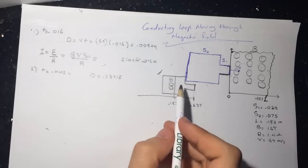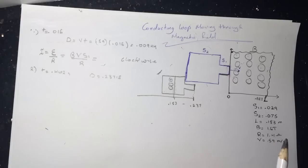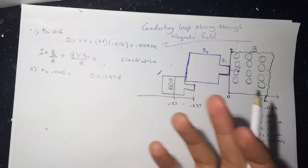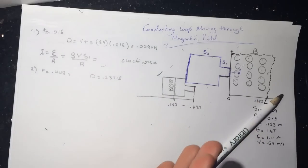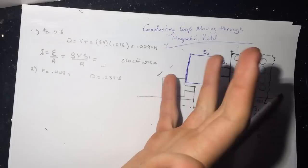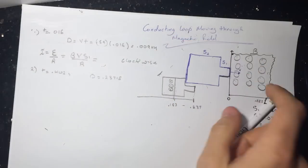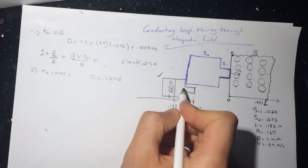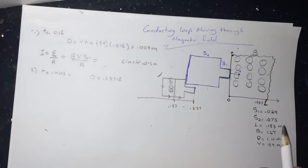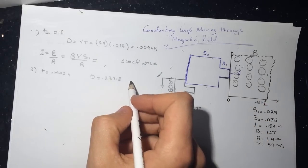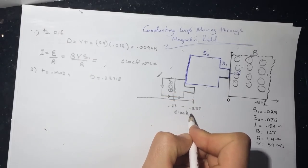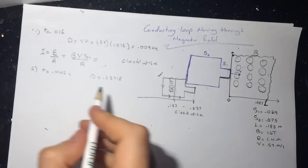So now if you look at this, the loop is losing dots. So it's going to induce a current to induce a field that's getting more dots. So to get more dots, we need our thumb to go up and our finger to curl. So it's going to look like this. So our thumb, the current will be going this way.